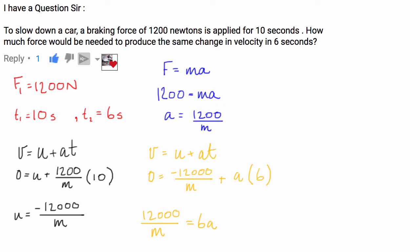And then what I'm going to do is I'm going to divide both sides by 6, so I have 12,000 divided by 6M is equal to A.